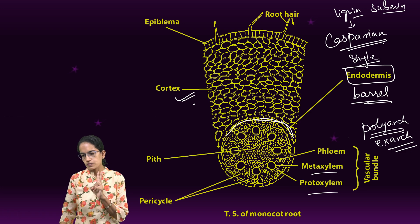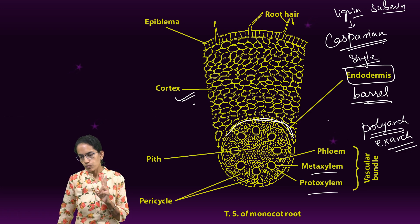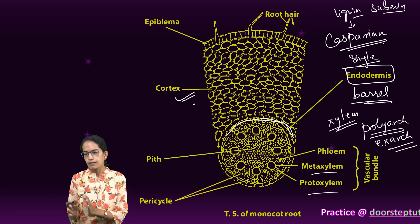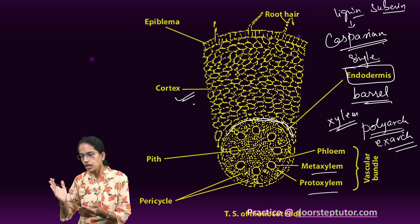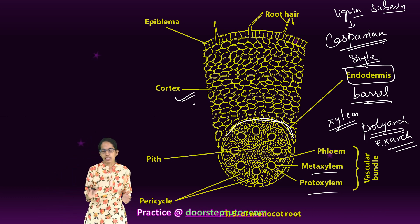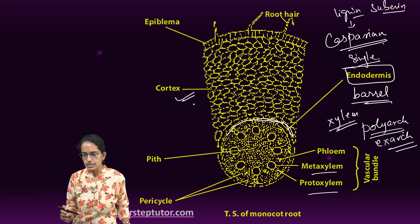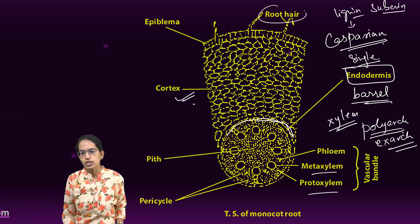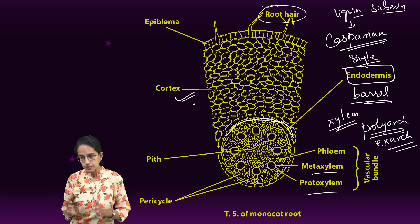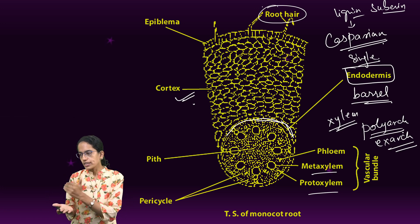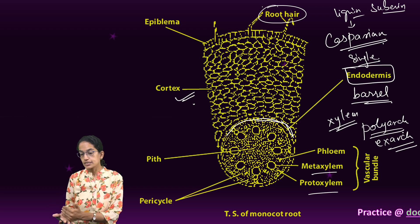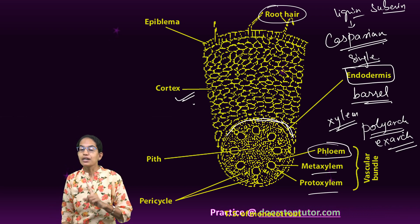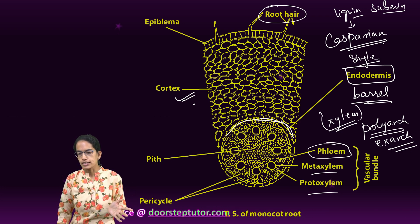Two important characteristics of xylem in vascular bundle of monocot are: it is polyarch, meaning many bundles together, and exarch, meaning it is on the outer side. Xylem provides mechanical strength to the plant and helps in conduction of water and minerals from the root hairs. Phloem conducts food.